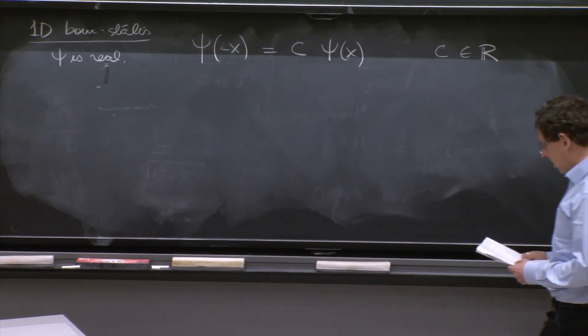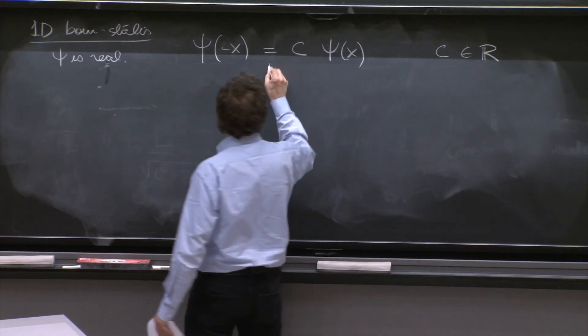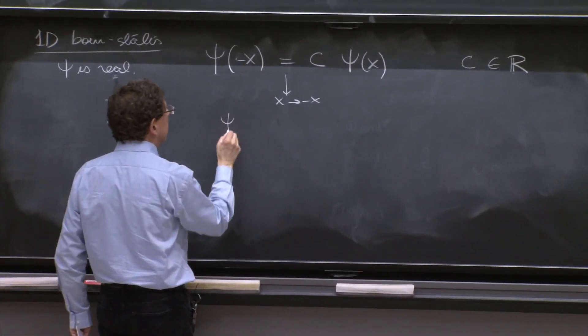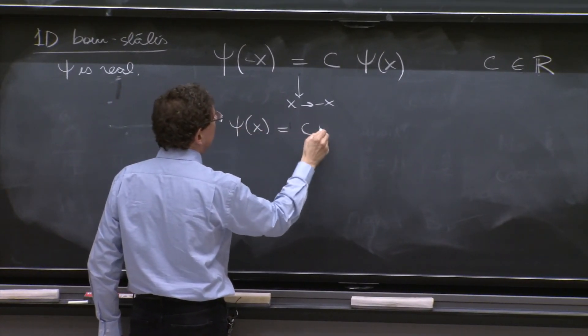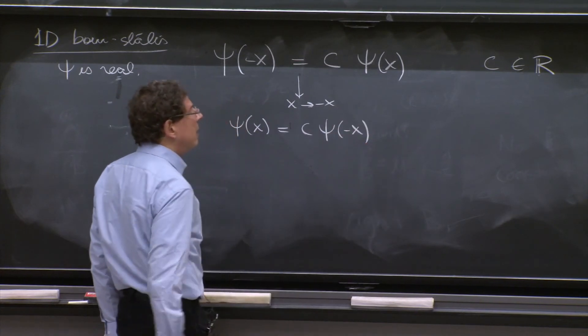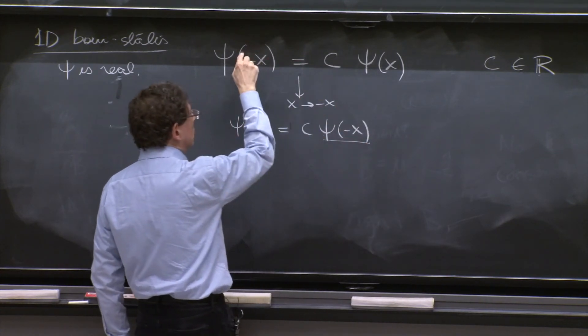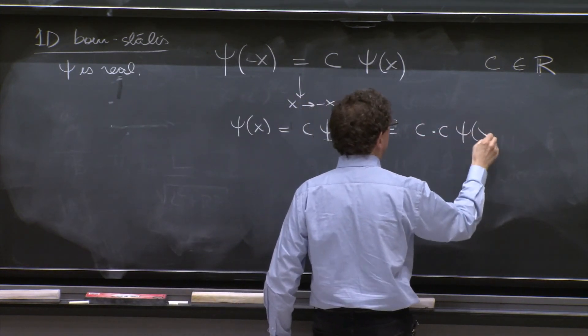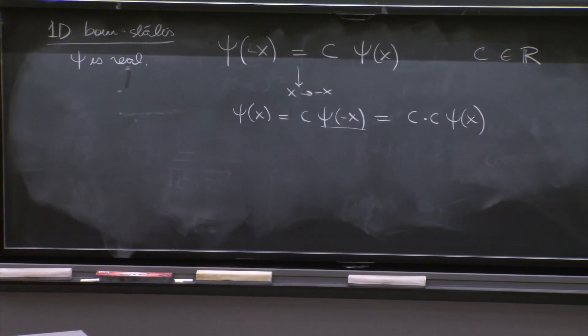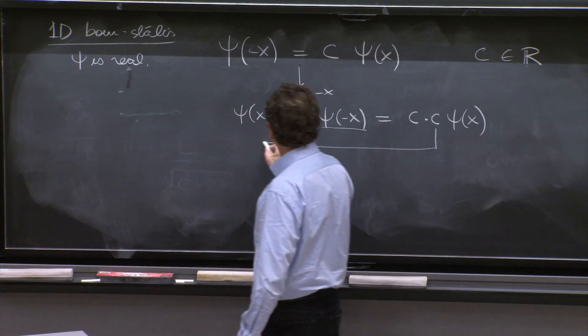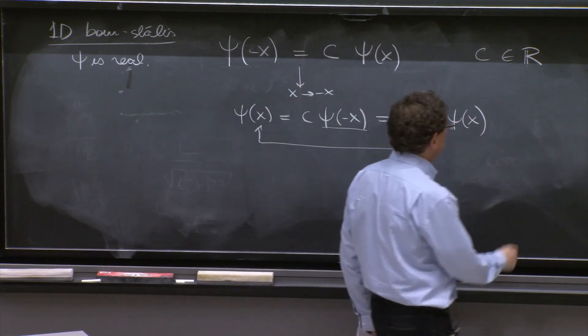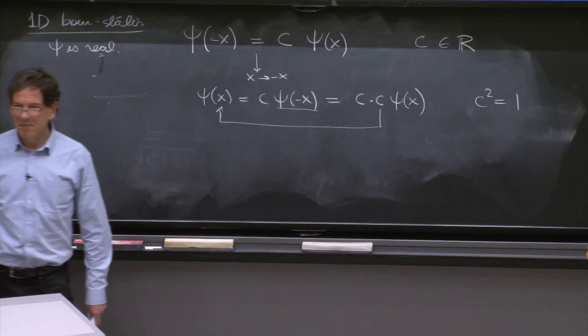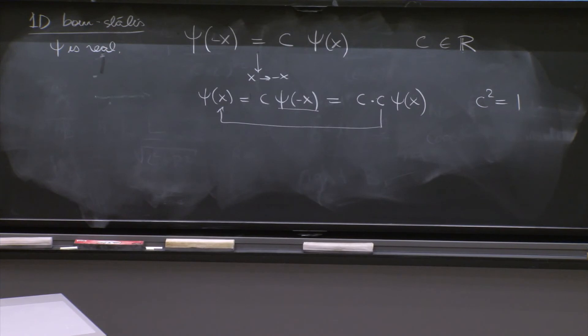There cannot be two solutions. Let x goes to minus x in this equation. So you would get ψ(x) = c·ψ(-x). But ψ(-x), use this equation again, and again, you get c times c·ψ(x). But from comparing these two sides, you get that c² must be equal to 1. But c is real.